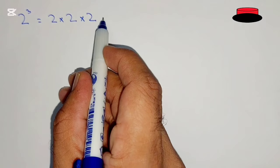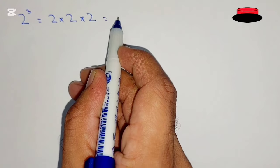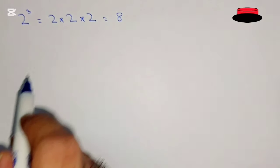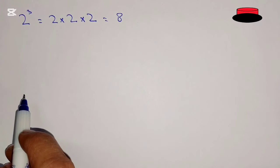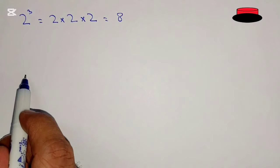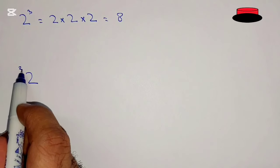So first of all, exponentiation. 2 power 3 means multiplying 2 by 2, 3 times. So 2 by 2 is 4, 4 by 2 is 8. Now we go to tetration.